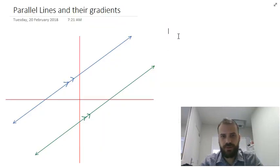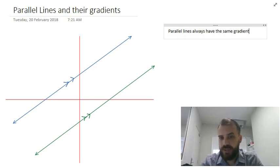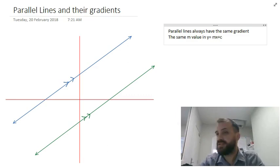All right, let's finish this up. Two parallel lines. Parallel lines always have the same gradient. That's the same m value in y equals mx plus c. All right, that's parallel lines. Thank you.